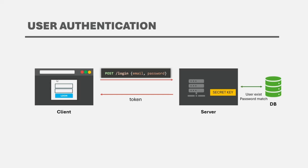The reason we keep a shorter expiration time for the access token is because it acts as an identity for the logged-in user, and they are stored on the client either in a cookie or in local storage. When you try to access an application using a browser, anyone can get access to that browser, grab the access token, and use it for authentication. That's why the shorter the access token lives, the higher the security.